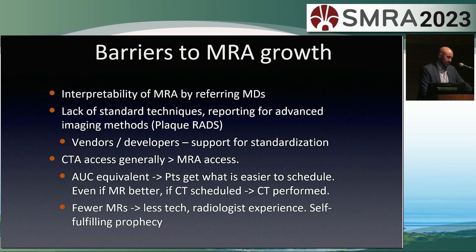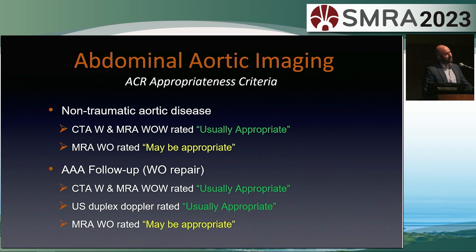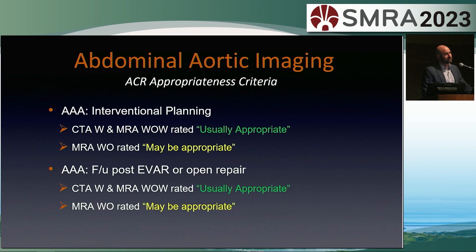A couple of barriers to MRA growth: CT images are really well interpreted by referring clinicians while our images may not be. There's a need for standardization of reporting — when discussing plaque or flow characteristics, it should be done in a standard way that referring colleagues can interpret. Vendors need to ensure quantitation is accurate and consistent. The appropriate use criteria indicate CT and MR are equivalent for many conditions, but MR is not used as often as it should be based on this. Thanks very much for your attention.